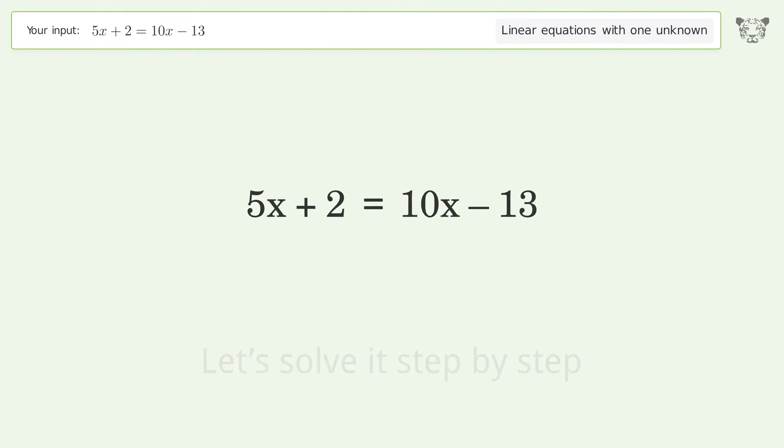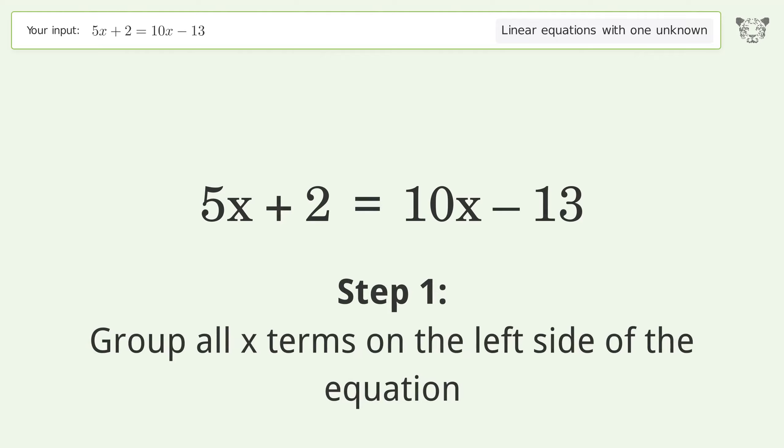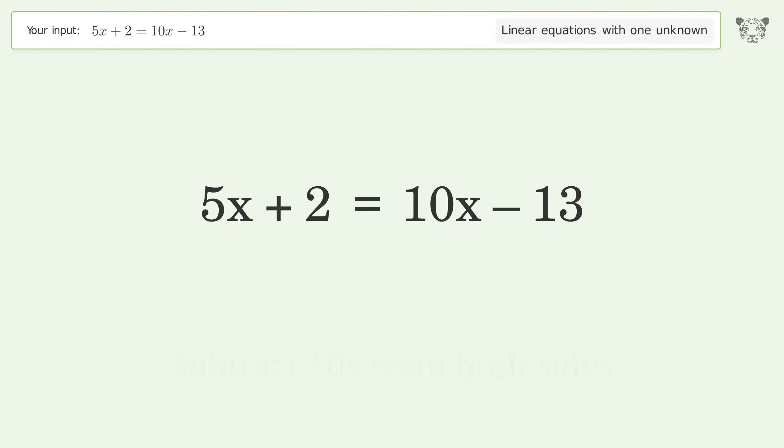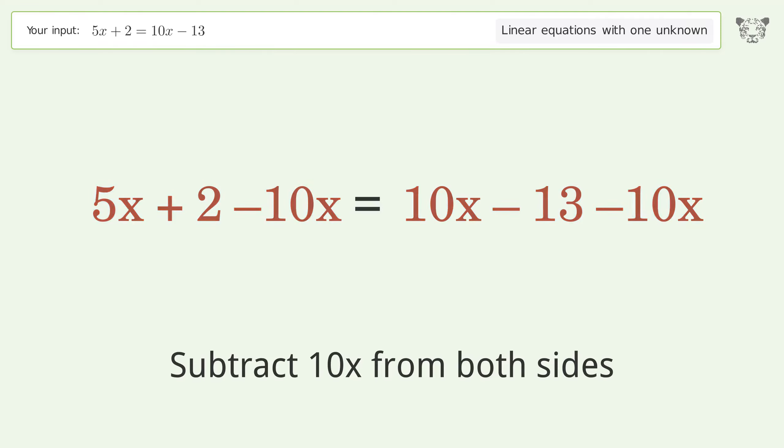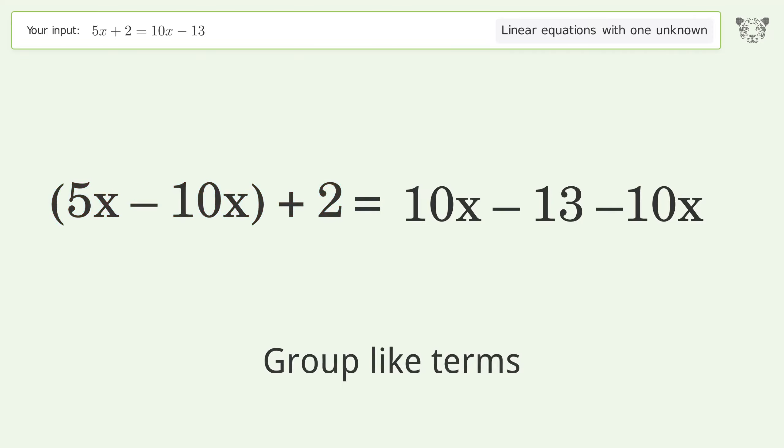Let's solve it step by step. Group all x terms on the left side of the equation. Subtract 10x from both sides. Group like terms. Simplify the arithmetic.